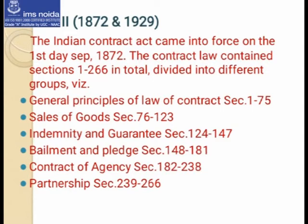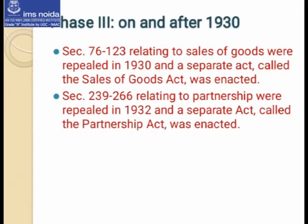Sections 124 to 147 deal with indemnity and guarantee, sections 148 to 181 deal with bailment and pledge, sections 182 to 238 deal with the contract of agency, and sections 239 to 266 deal with partnership. So when this Contract Act was made, it comprised 266 sections dealing with different types of things.